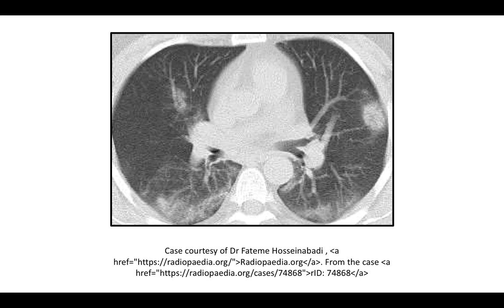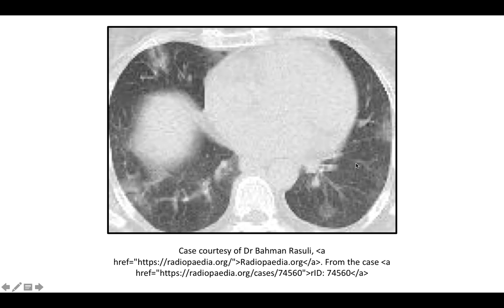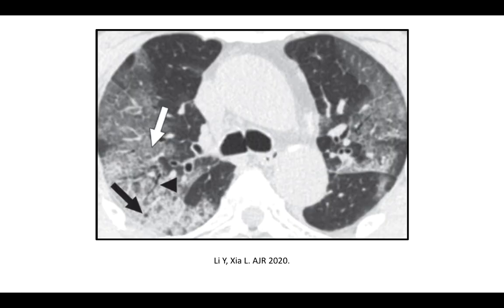Here is a classic case showing bilateral, peripheral, predominantly posterior ground glass opacities — some of them are rounded. Here is another example with rounded opacities that are bilateral, peripheral, and predominantly basal. This is an example in which both ground glass opacities and consolidation co-exist.